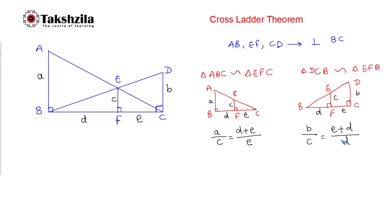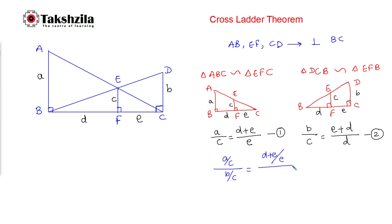This is equation one and this is equation two. Now let's divide equation one by equation two. We get A divided by C, divided by B divided by C, which equals D plus E divided by E, divided by E plus D divided by D. Solving this further, we find that A divided by B equals D divided by E.